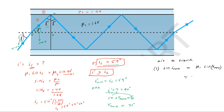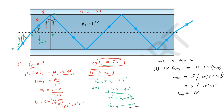Calculating: sin(i_max) = 1.68 × sin(31°). Working this out and rounding off, the maximum angle of incidence in air is approximately 60 degrees.